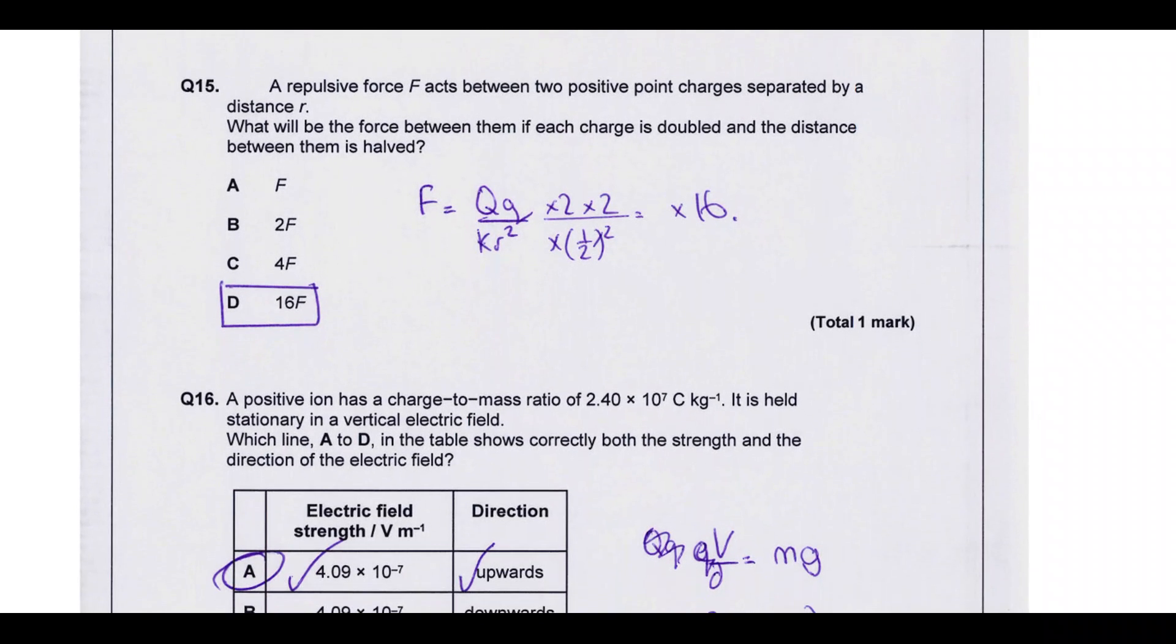A repulsive force f acts between two positive point charges separated by a distance r. What will be the force between them if each charge is doubled and the distance between them is halved? This is your equation for the force between charged particles. I've just written the 4πε₀ as a constant because it doesn't matter. So it says each charge is doubled, so the top line is multiplied by 4. And it tells you that the distance is halved, so the bottom line is essentially quartered, giving you an overall change of times by 16. So the force is now 16 times bigger.